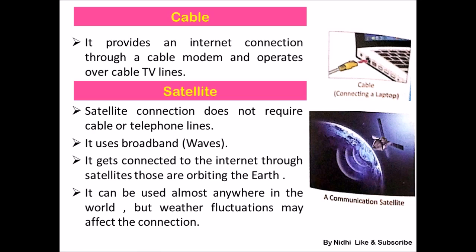However, satellite connectivity depends on weather conditions. If the weather is fluctuating, you will not get a signal or there will be disturbance in connectivity. You can see pictures here — the first showing a cable connection and the second showing a communication satellite.